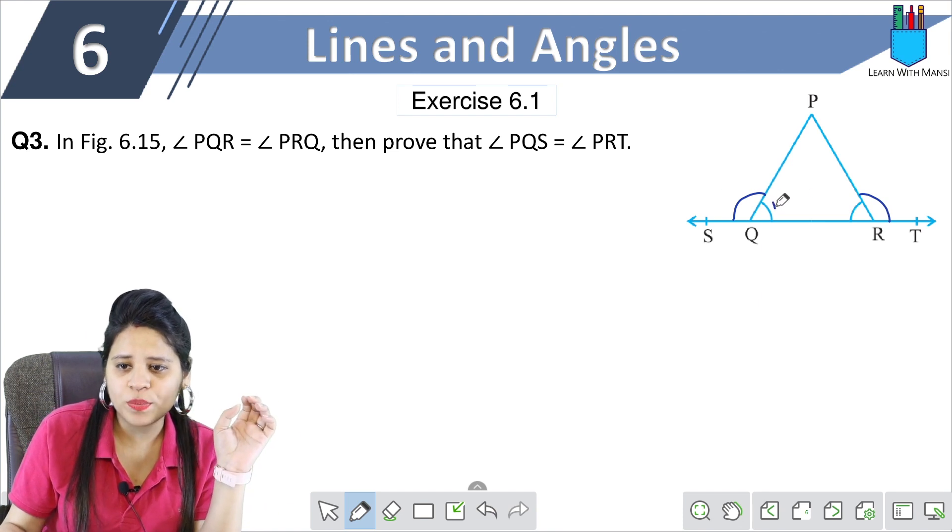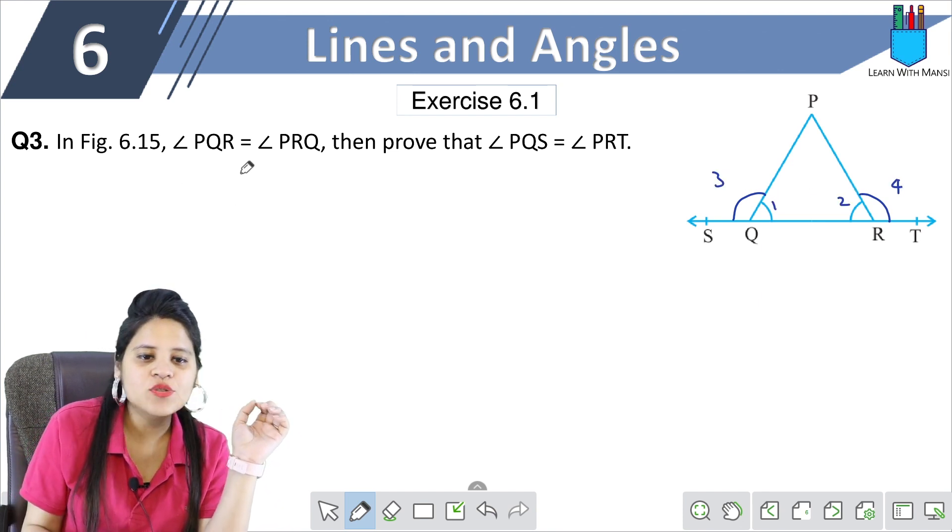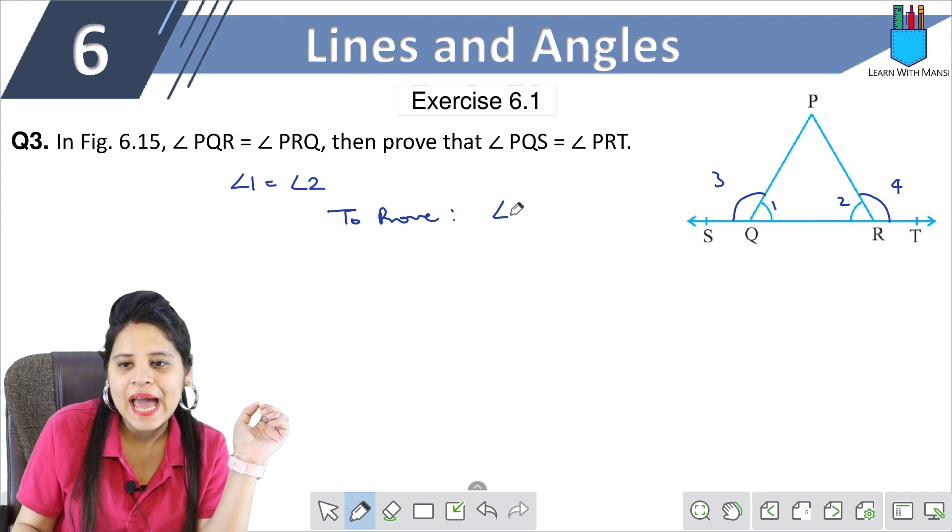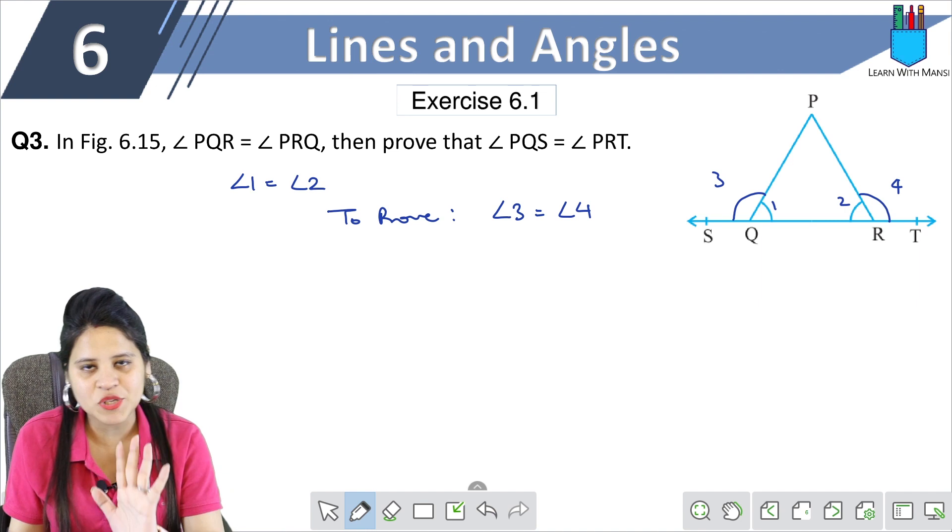So in short, I will name them 1, 2, 3, 4. So we have given angle 1 equal to angle 2. And we have to prove that angle 3 will equal angle 4. So now here, we have to prove that PQS is equal to angle 4.